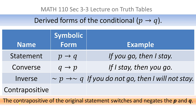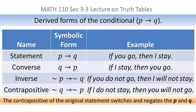Finally, there's a derived form called the contrapositive. The contrapositive does both things: it switches and negates. In the original statement it was p implies q; in the contrapositive, q moves to the left and p moves to the right, but they're also negated. So 'if you go then I stay' would have a contrapositive that says 'if I do not stay then you will not go.'